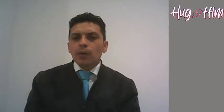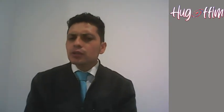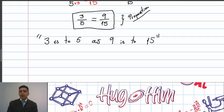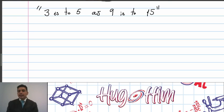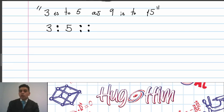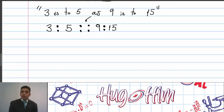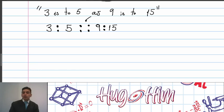Now, the question is: how can you notate this proportion? Is there any other way to represent it? Yes, there's another way. The other way to represent this proportion is by using colons — 3 colon 5, then two consecutive colons to show 'as,' then 9 colon 15. So we have the written form, and the other way is the equation form using colons to represent a proportion. This is how you can identify whether a proportion is true or false.